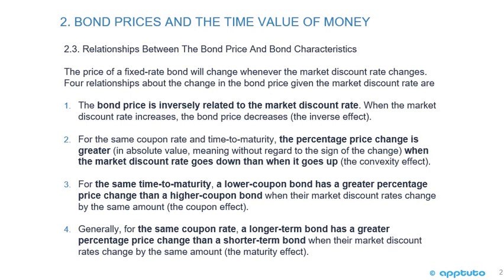Number one: the bond price is inversely related to the market discount rate. When the market discount rate increases, the bond price decreases — the inverse effect. Number two: for the same coupon rate and time to maturity, the percentage price change is greater in absolute value when the market discount rate goes down than when it goes up. That's the convexity effect. We're going to elaborate on that when we look at a table and a chart.